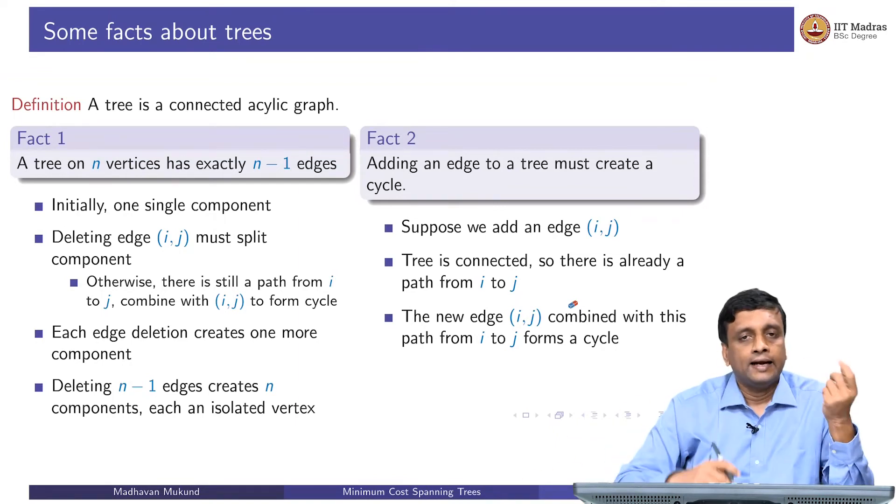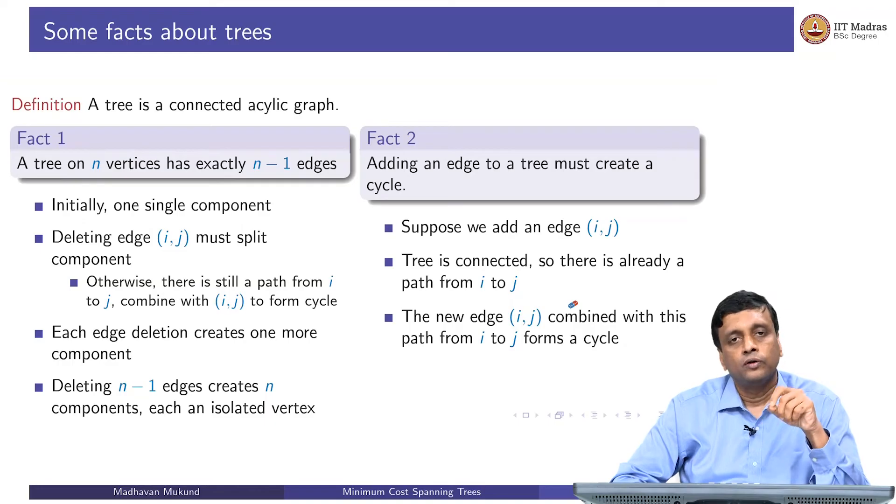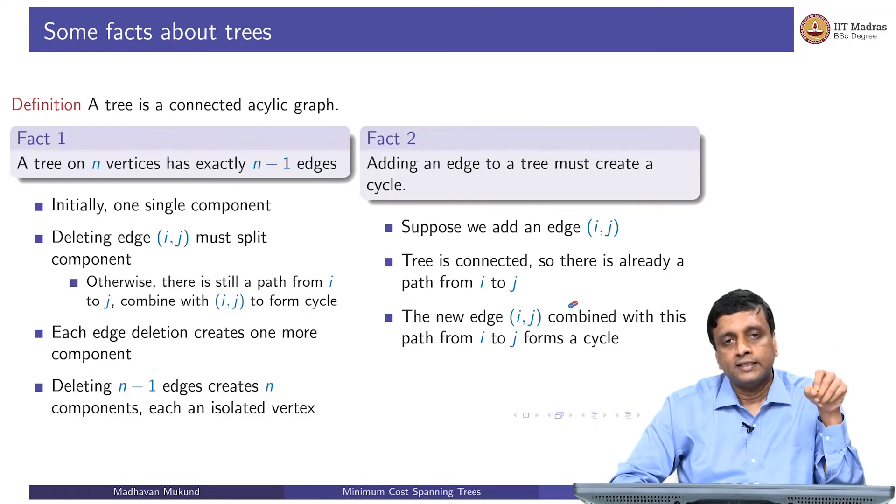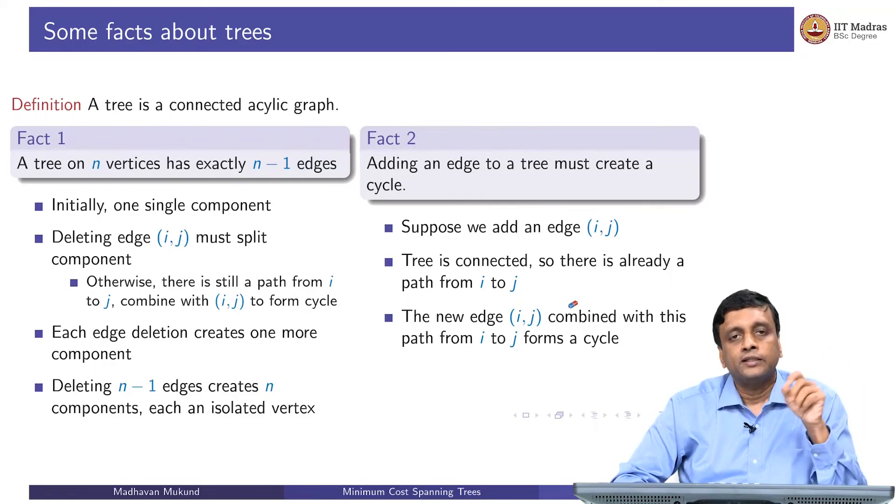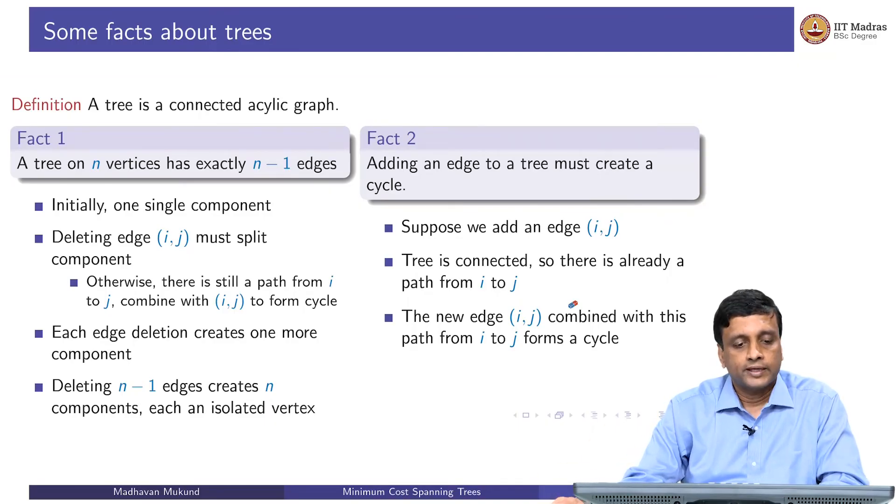Conversely, if I take a tree and add an edge, it must create a cycle for the same reason we said before, because you could already go from anywhere to anywhere. Now if you add an edge, you are adding another way to go. The new edge plus the old path - so I have already a way to go from i to j, and I have added an edge directly from i to j. Together, this must form a cycle. So adding an edge to a tree will form a cycle.